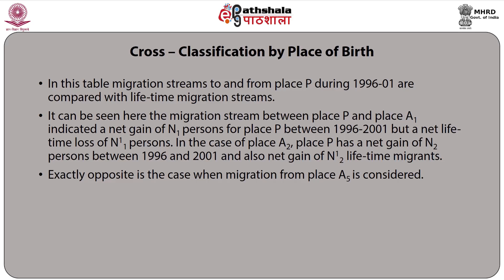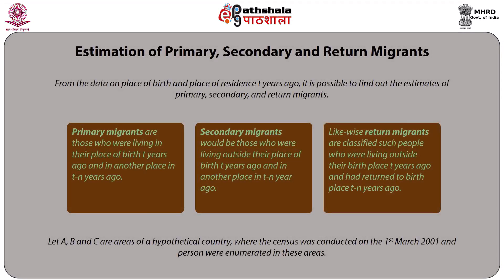Coming to estimation of primary, secondary, and return migrants: from data on place of birth and place of residence T years ago, it is possible to find estimates of primary, secondary, and return migrants. Primary migrants are those who were living in their place of birth T years ago and in another place T-minus-N years ago. Secondary migrants would be those who were living outside their place of birth T years ago and in another place T-minus-N years ago.